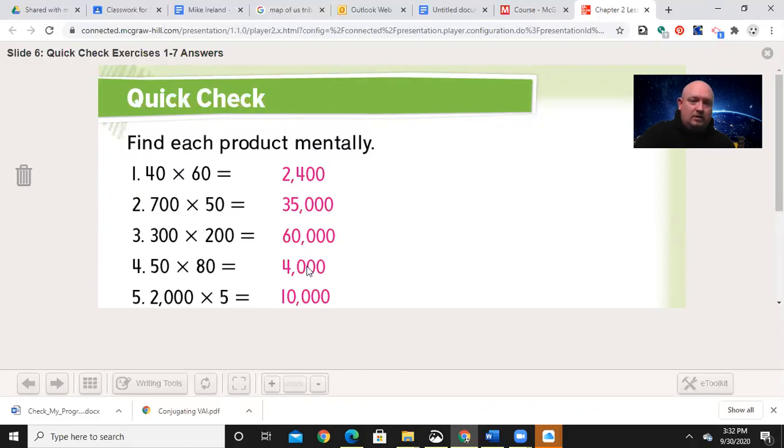5 times 8 is 40, and there are two zeros. So now instead of having just two zeros, we have three, but that's because multiplying the non-zero digits gave us 40, which had one zero in there, so you should have 4,000.